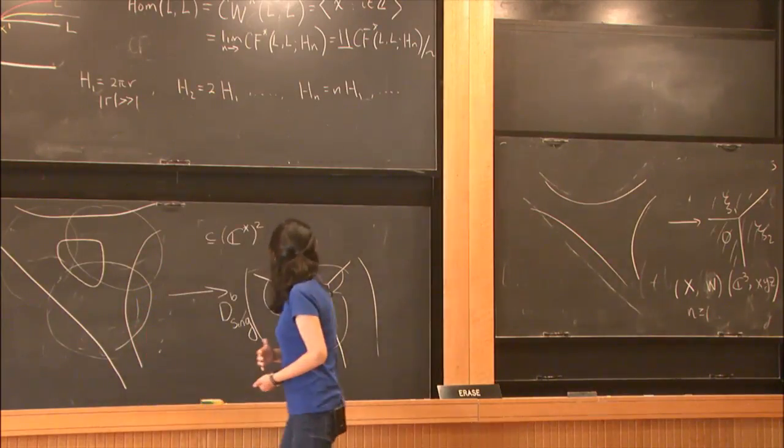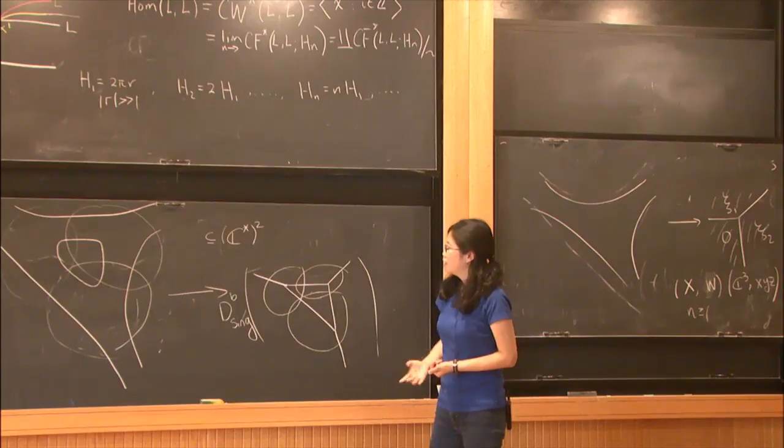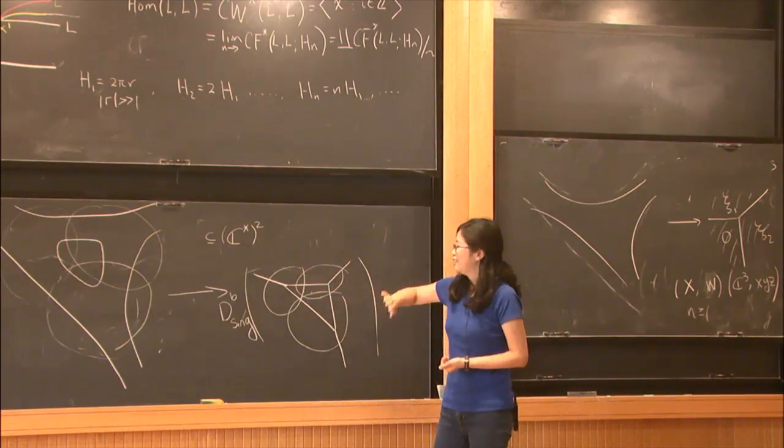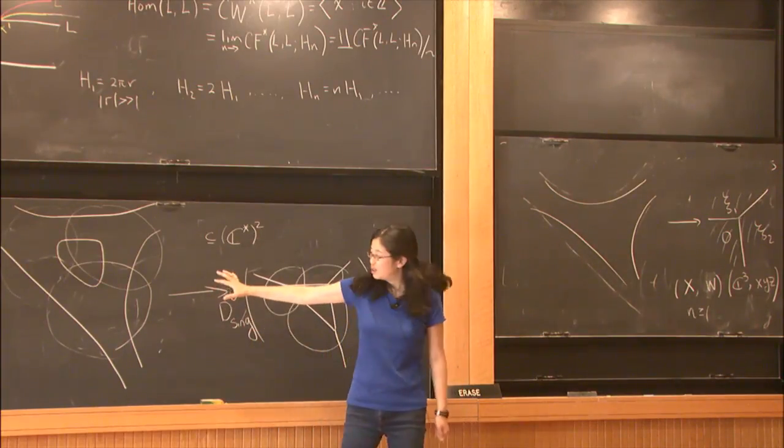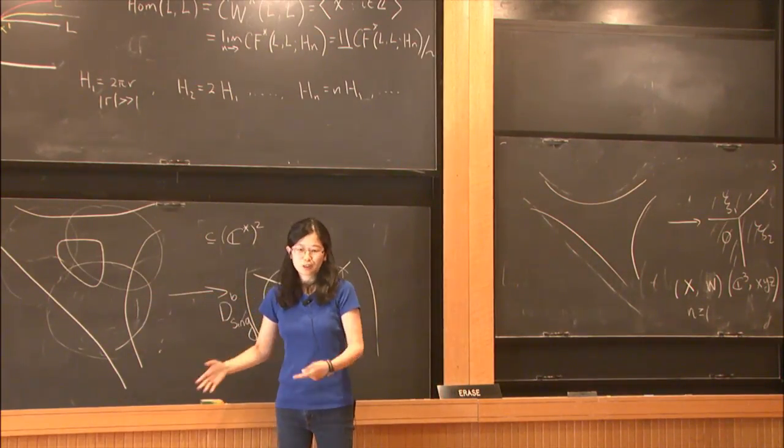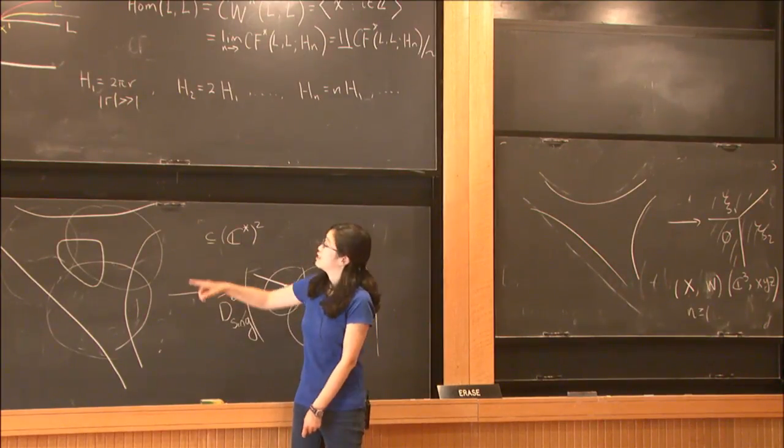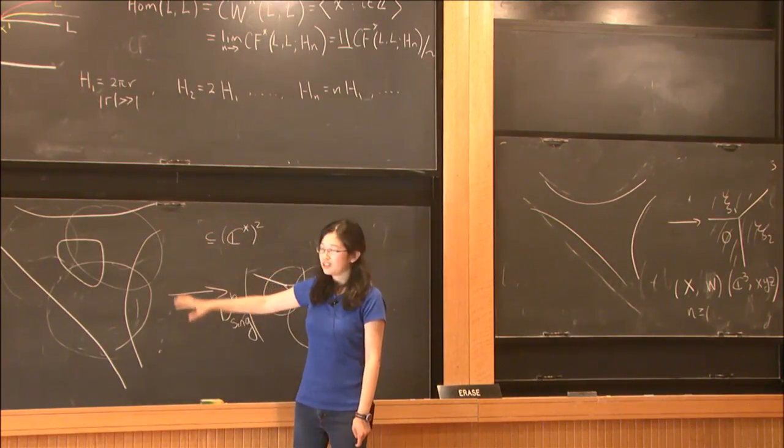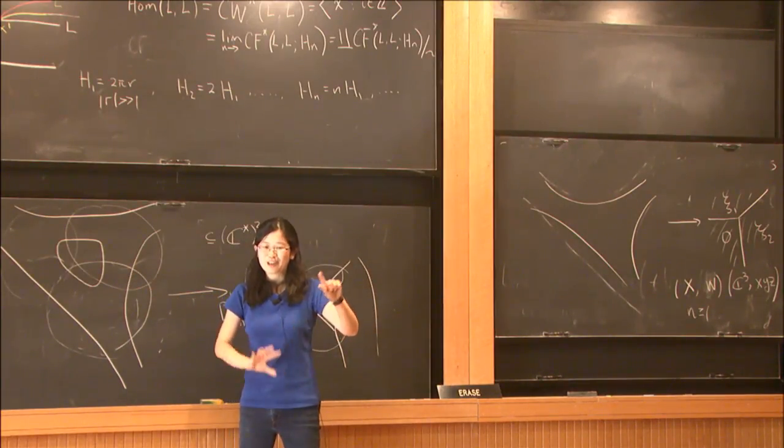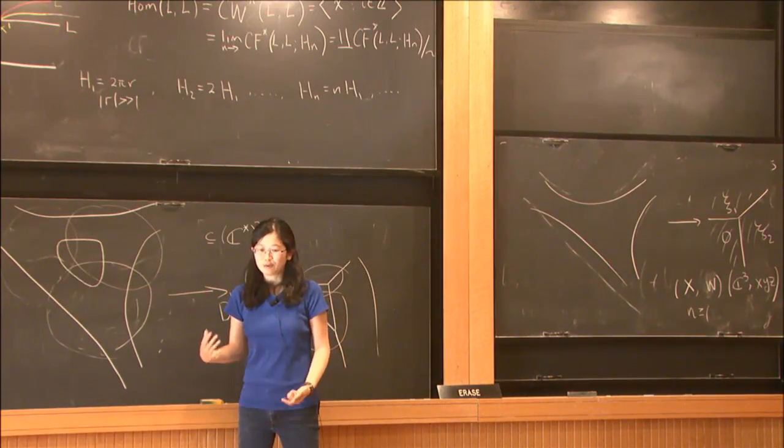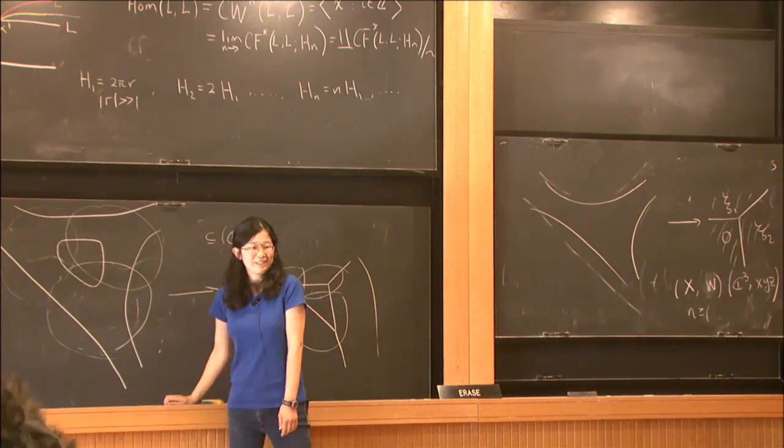And sorry for going over time. So I just want to end, so we know how to compute the, to do the mirror symmetry for these punctured surfaces. But I just want to end with the question that I really want to do this for hypersurfaces in C star N. And I think philosophically, maybe we can try to decompose into a pair of pants as well and try to do something like this. Okay. Thank you, everyone.